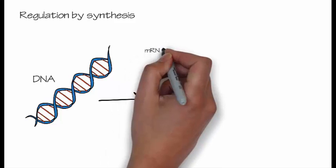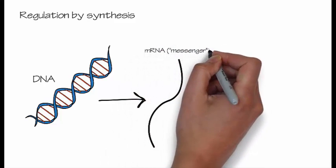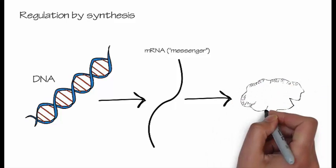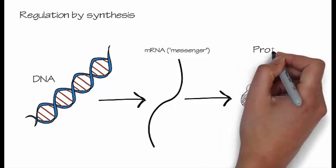The instructions to make an enzyme must first be encoded in a different molecule, RNA, so that ribosomes can decode it, read it, and finally synthesize the enzyme.